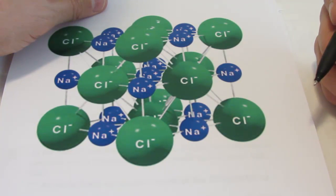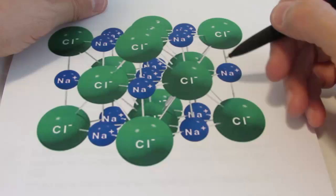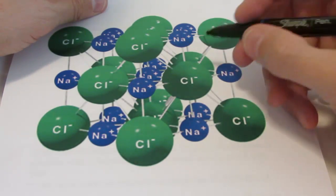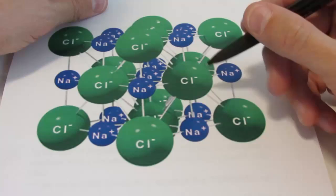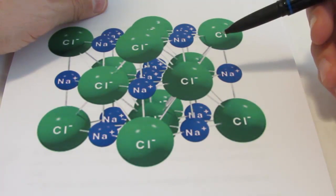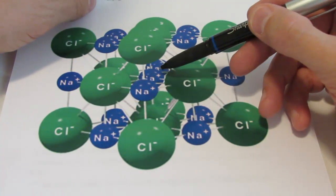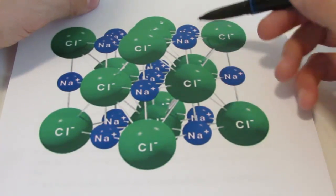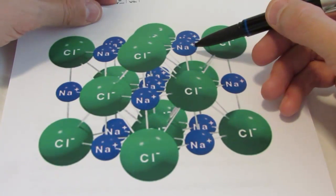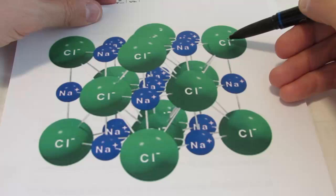You might wonder, well, why is the formula for sodium chloride NaCl, inferring a one-to-one ratio? Shouldn't there be six chlorines for every sodium? Well, not so fast. Let's take a look at this sodium ion. Oh, maybe that one's too hard to see. Let's take a look at this one right here.